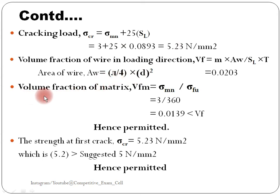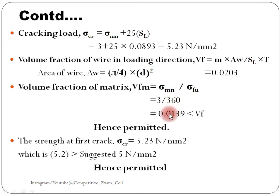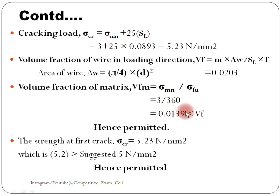Next we need to calculate the volume fraction of matrix, vfm, which equals sigma mn divided by sigma fu. Sigma mn is given as 3 and sigma fu is also given. Putting both values, we get vfm equal to 0.0139. This vfm must be lesser than vf — only then is it permitted to use the wire and the matrix together.